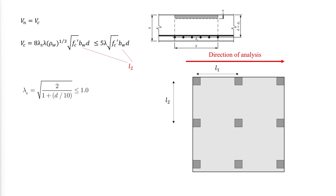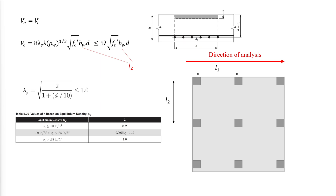The values of lambda depend on the concrete density and can be extracted from the corresponding table. ρw is the ratio of flexural reinforcement As divided by Bw times d. The value of F'c used to calculate the shear strength is limited to 10,000 psi. The strength can then be checked against the available loads, where an additional term is added to minimize the likelihood of diagonal compression failure and limit cracking.